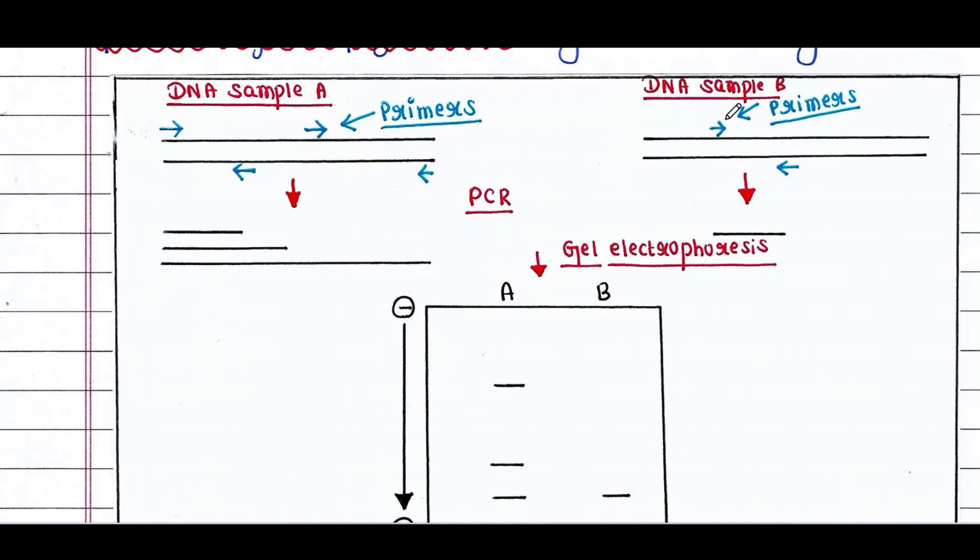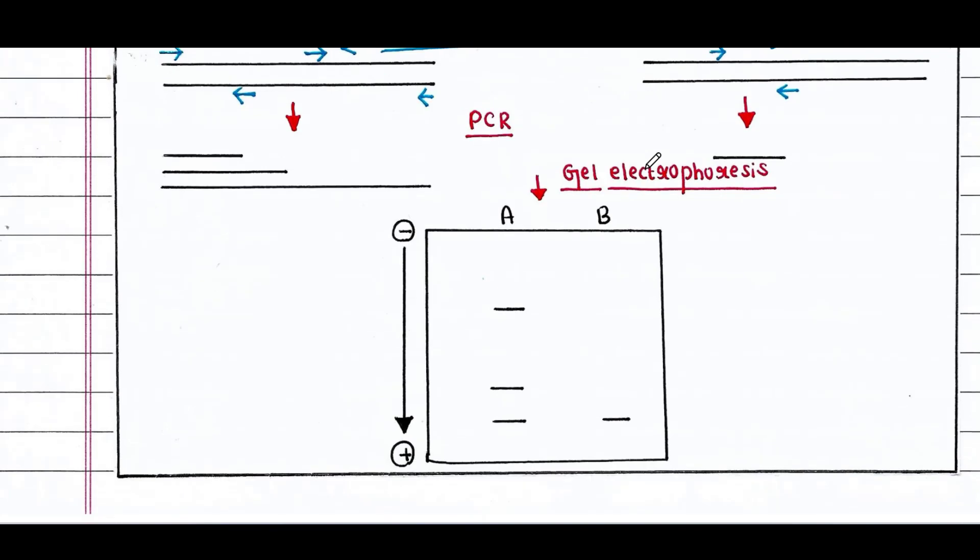Since these two samples are isolated from two different individuals, generally many point mutations occur which distinguish individuals from one another. This is called polymorphism. And this is the result of gel electrophoresis.